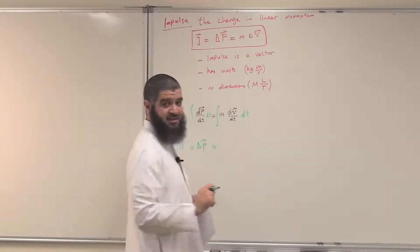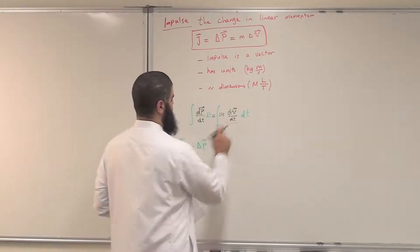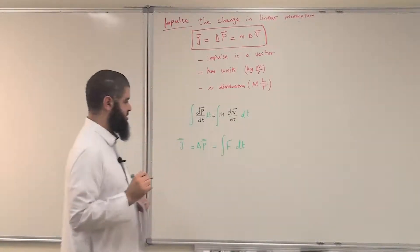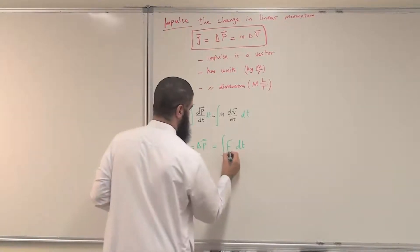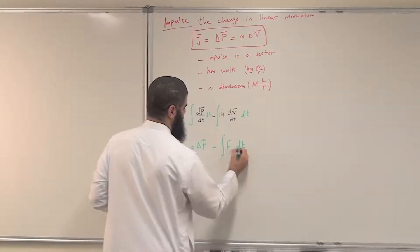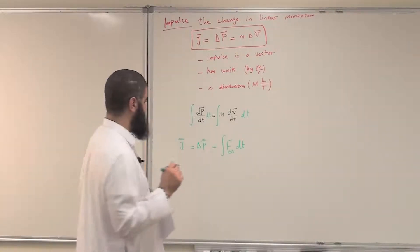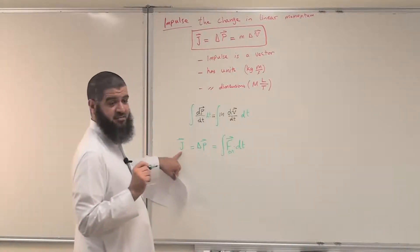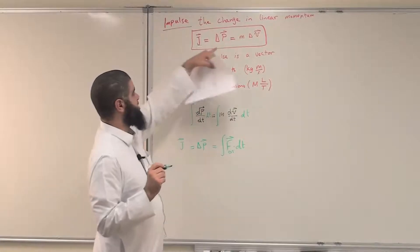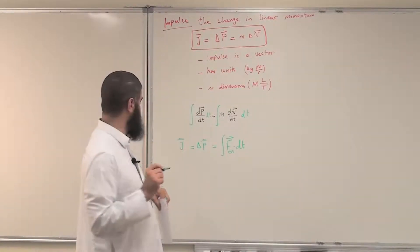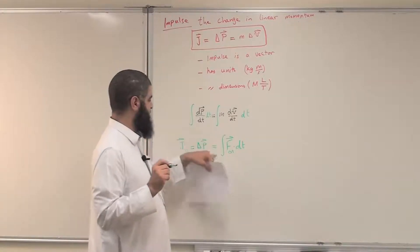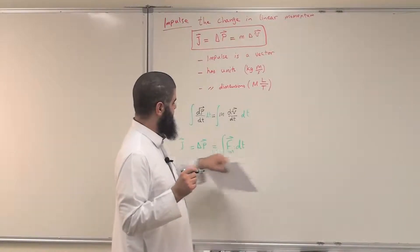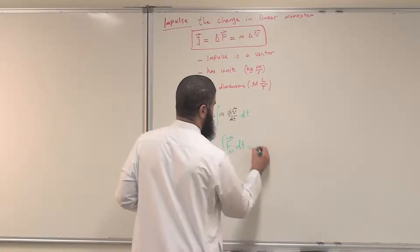M dV by dt is the acceleration, so mass multiplied by acceleration is F. Integrating gives us the integral of F dt, which is the external force multiplied by dt. So the integral of the external force with respect to time is another definition for the impulse. The impulse equals the change in momentum, equals M times the change in velocity, or equals the integral of the external applied force with respect to time.